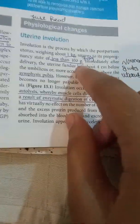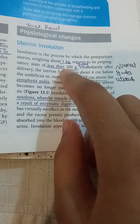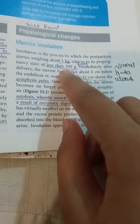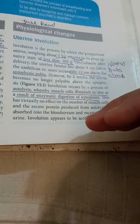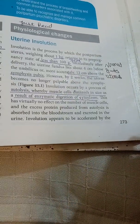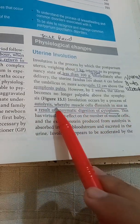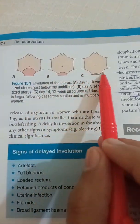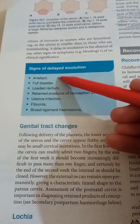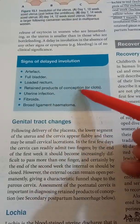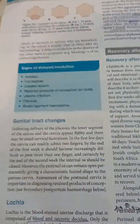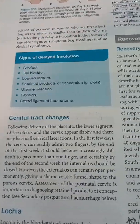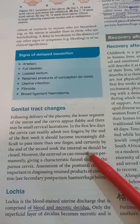During this period, physiological changes occur. The uterus, which weighs around 1 kg due to hyperplasia and hypertrophy, comes back to its normal state of 50 to 70 grams through autolysis — where muscle cell cytoplasm is digested by enzymes. Signs of delayed involution include full bladder, loaded rectum, retained products of conception, uterine infection, fibroid, and broad ligament hematoma.